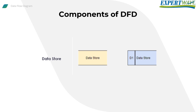Data Store or Warehouse is where the data is stored for later use. Two horizontal lines represent the symbol of the store. The data store can be anything like a database file, a folder with documents, optical disk, or a filing cabinet. The data warehouse can be viewed independently of its implementation.